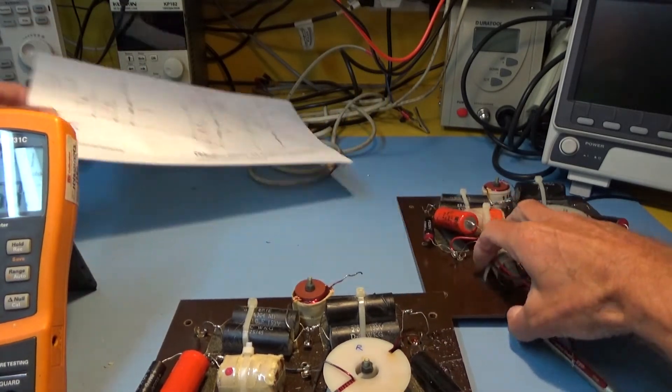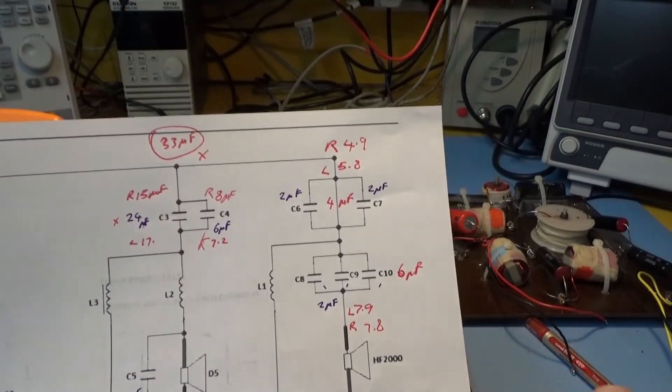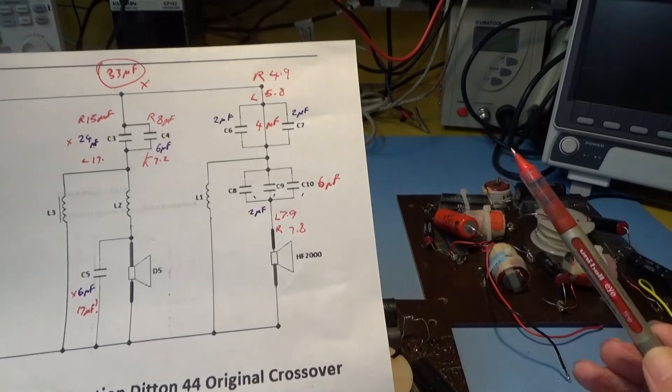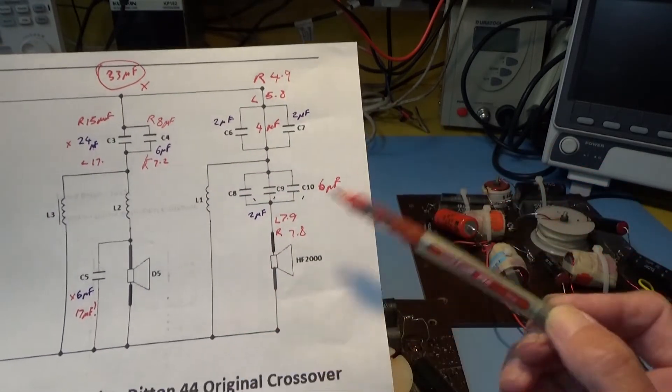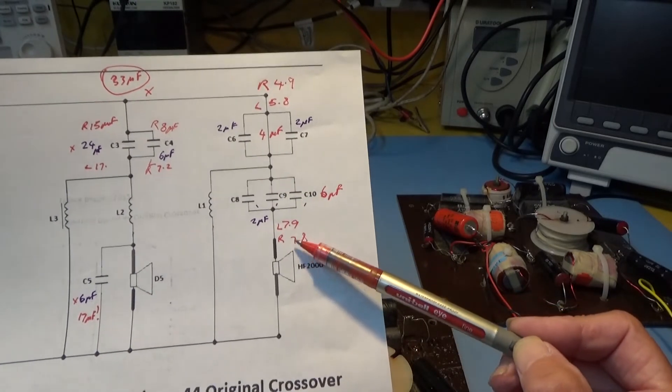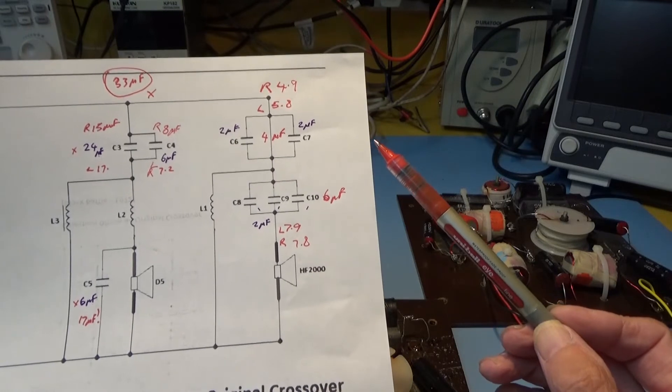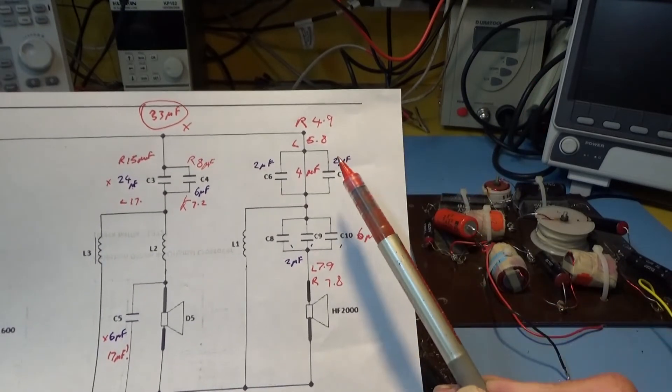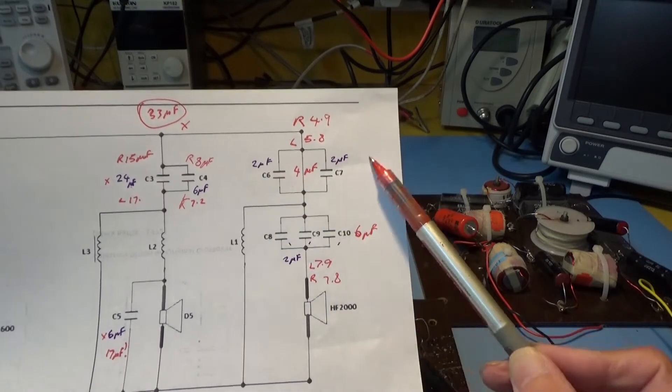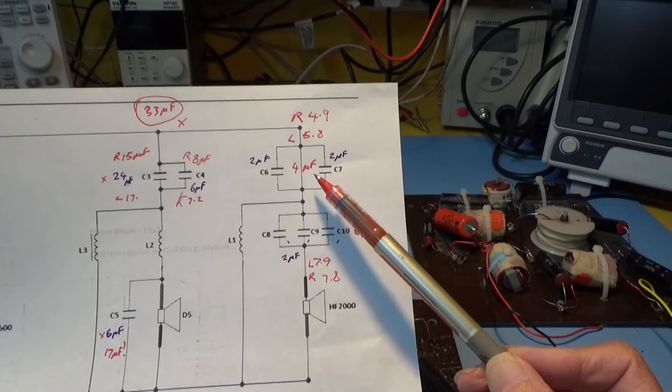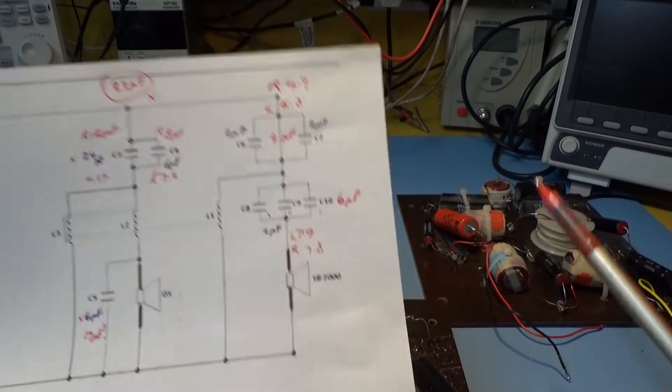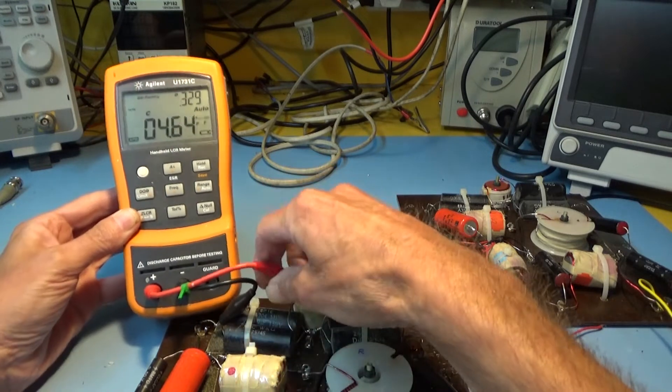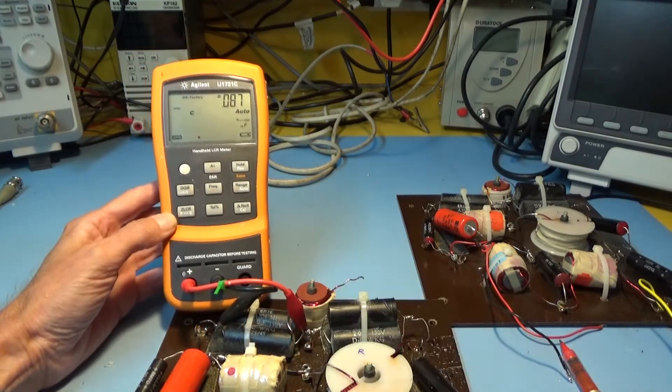Finally we've got the tweeter, which looks to me like a high pass. You've got a capacitor coming in, inductor down to earth, and capacitor coming out to the speaker. Once again they've used capacitors which are no longer available at 2 microfarads. They've got two 2s in parallel to produce 4, and then another 3 in parallel to produce 6. Let's measure those. I've disconnected all the leads, obviously.